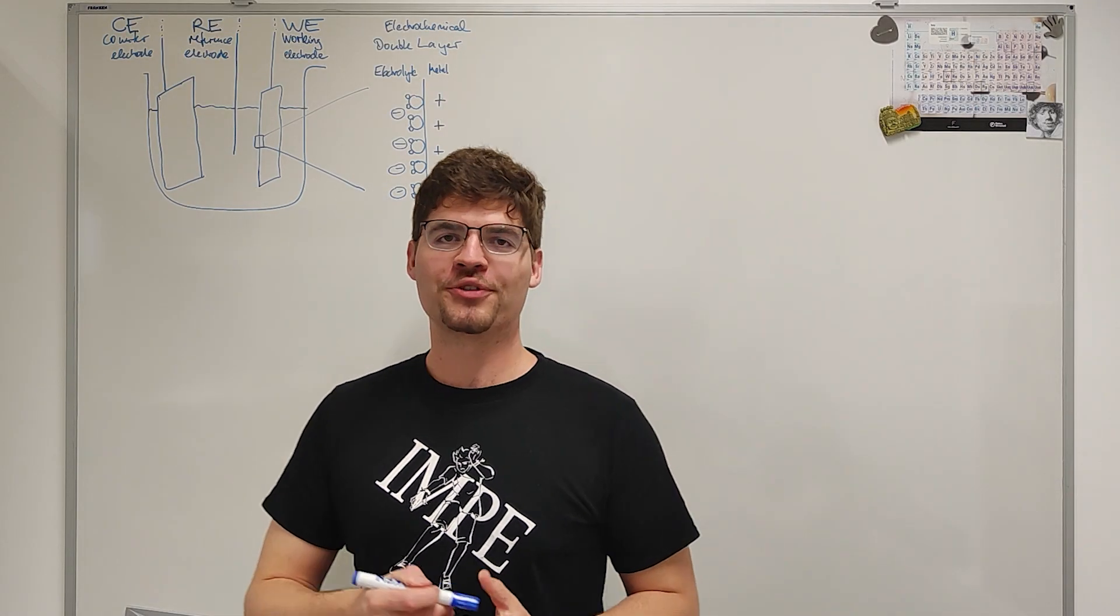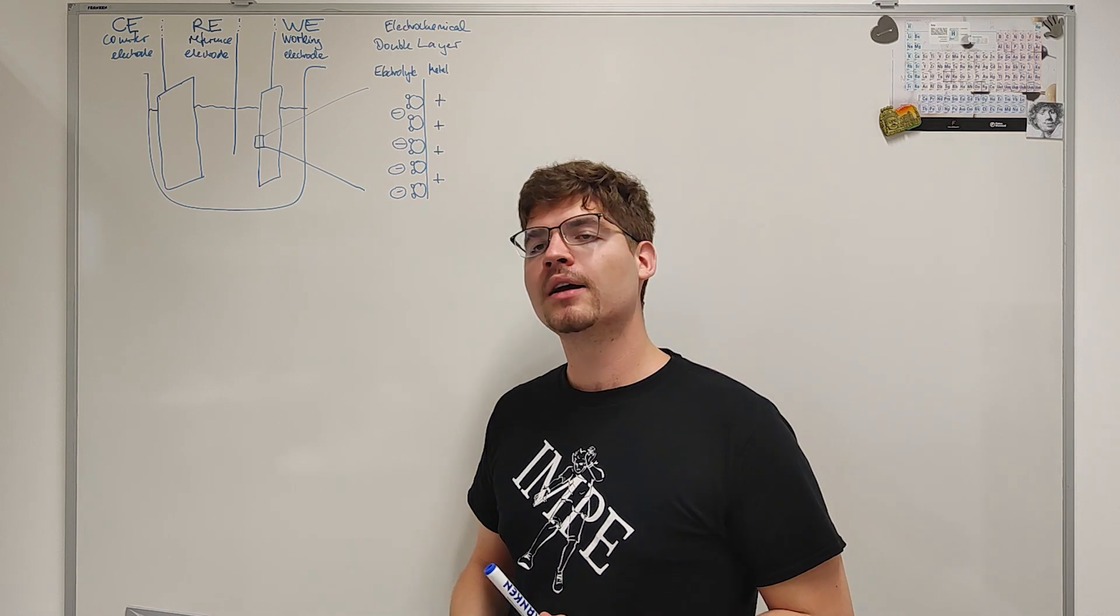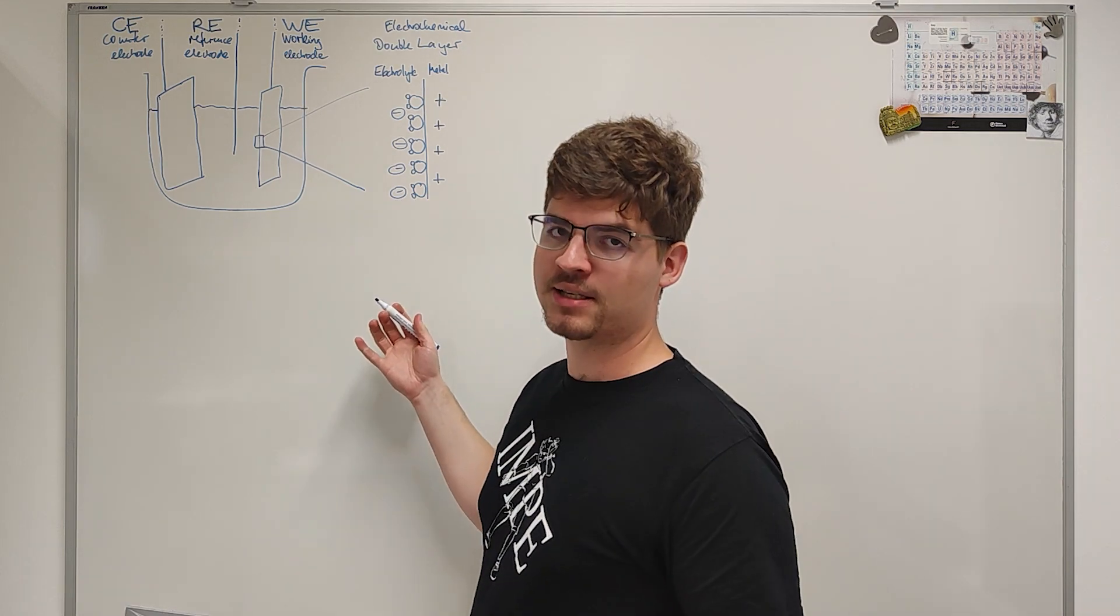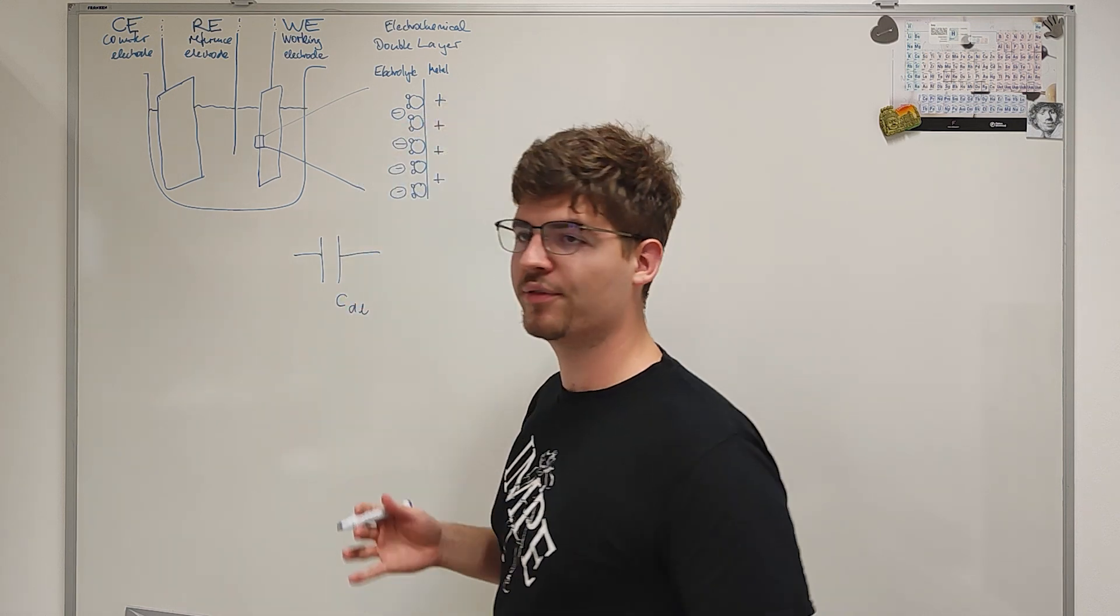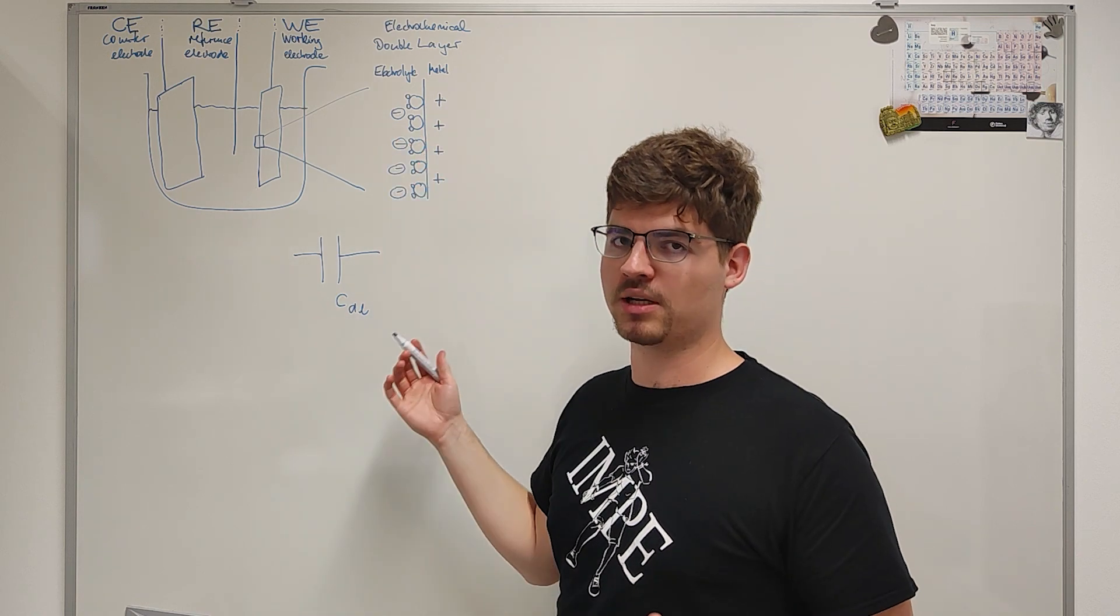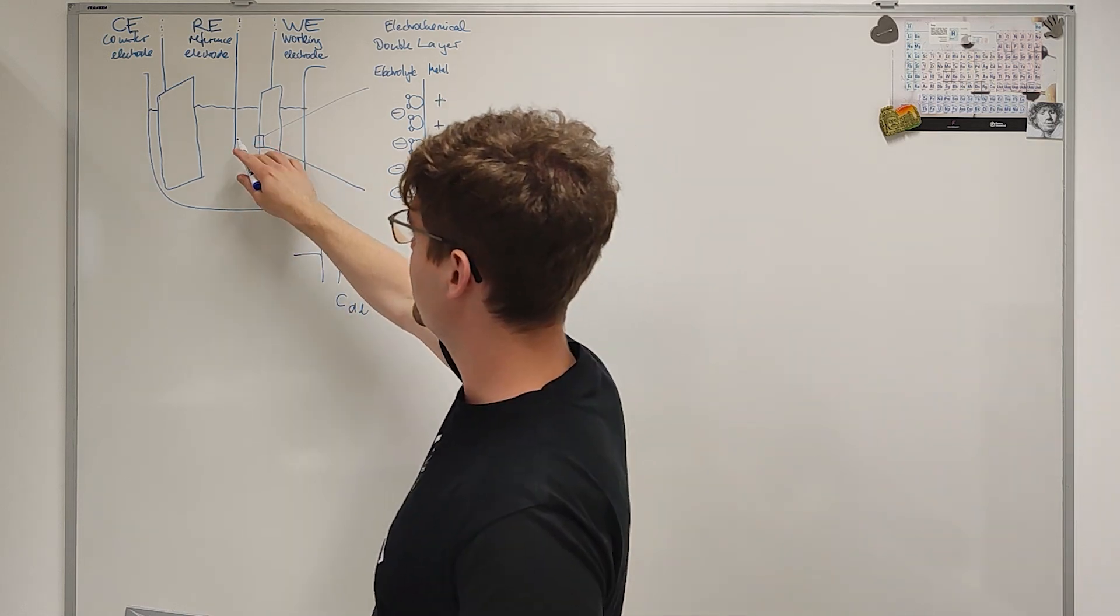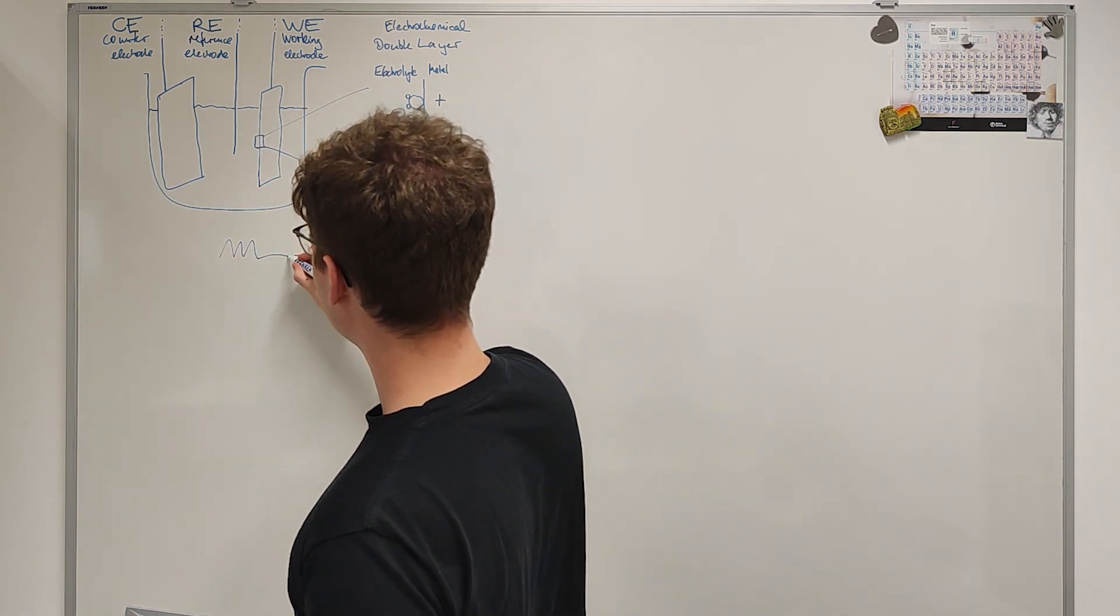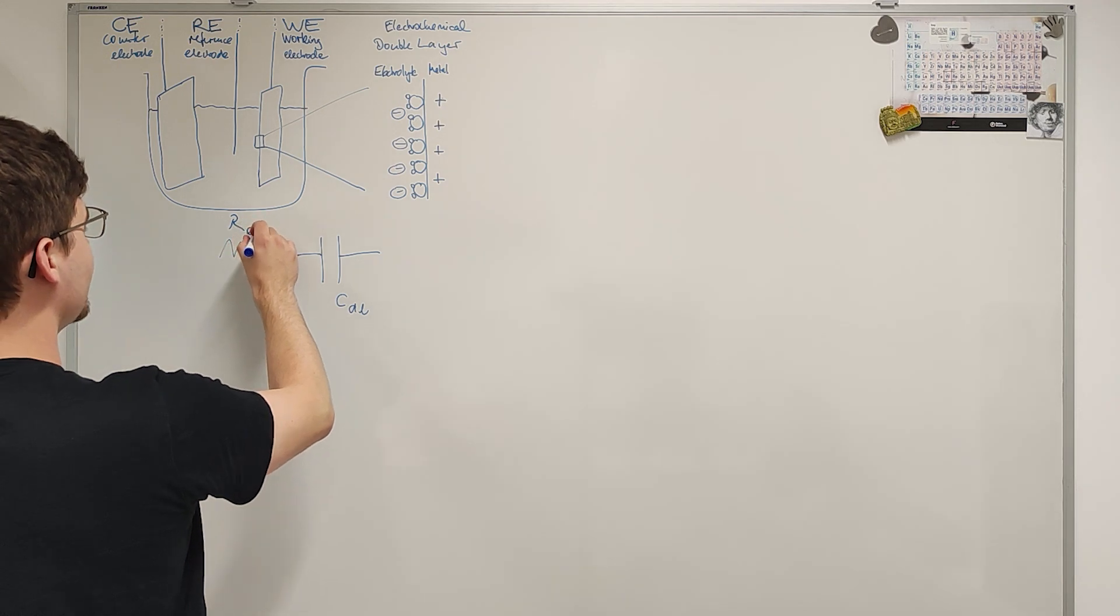Welcome back to the whiteboard. What we've just seen in the lab was how an electrochemical double layer responds to a voltage step excitation. What we have is the electrochemical double layer, which we can model as a capacitor, which may have a capacitance CDL. However, this capacitor cannot be charged infinitely fast, because the charges, the ions that have to move into the electrochemical double layer are limited by the electrolyte conductivity.